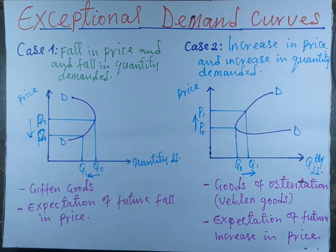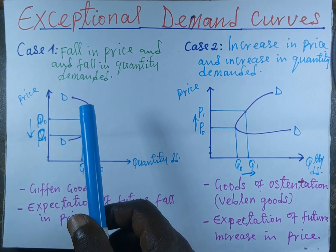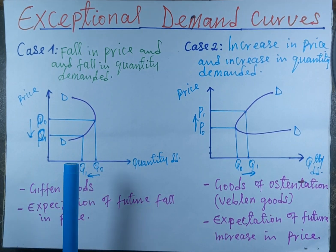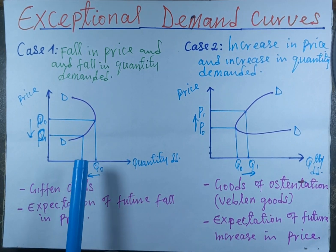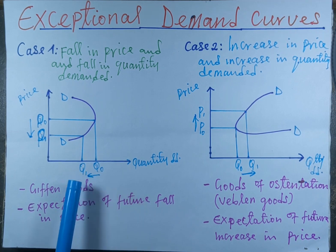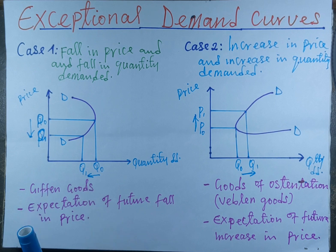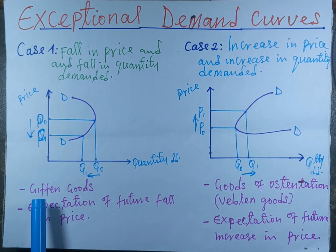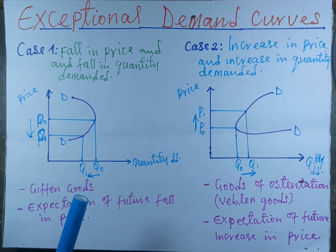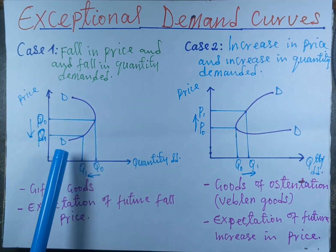Let's start with the first case, where price falls and quantity demanded also falls. The demand curve for Giffen goods is regressive at the bottom — this means quantity demanded falls as price falls. Giffen goods are a special type of inferior good. Their quantity demanded also falls as price falls, and we can explain this using this graph.